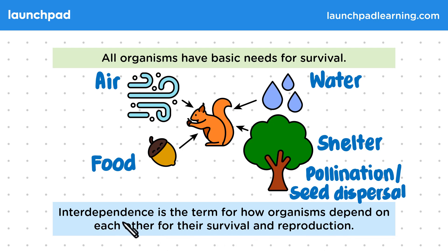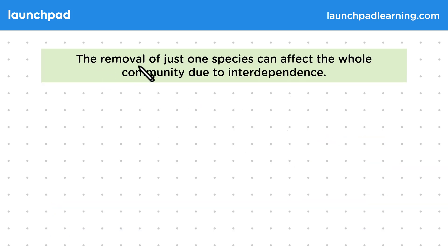So interdependence means dependence between species. Why is interdependence so important? The removal of just one species can affect the whole community due to interdependence.